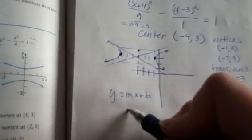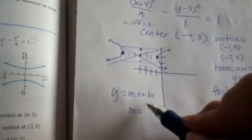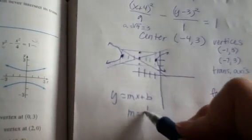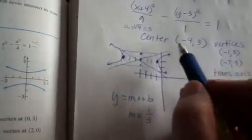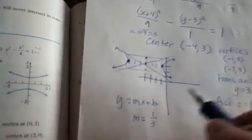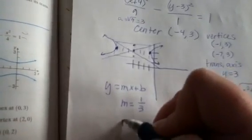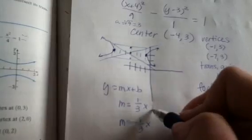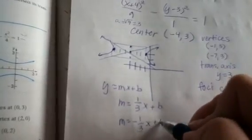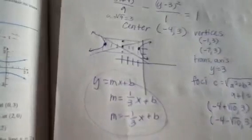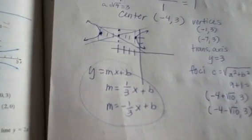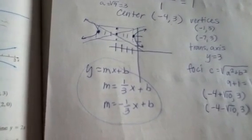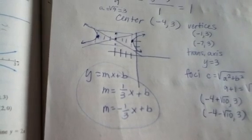And m in this case is going to be 1 over 3 because it's b over a going that direction, right. And m equals negative 1 over 3 so that's x but then you have to find the y-intercepts for those. So if you want to go to the effort of doing that could be good but you don't have to.